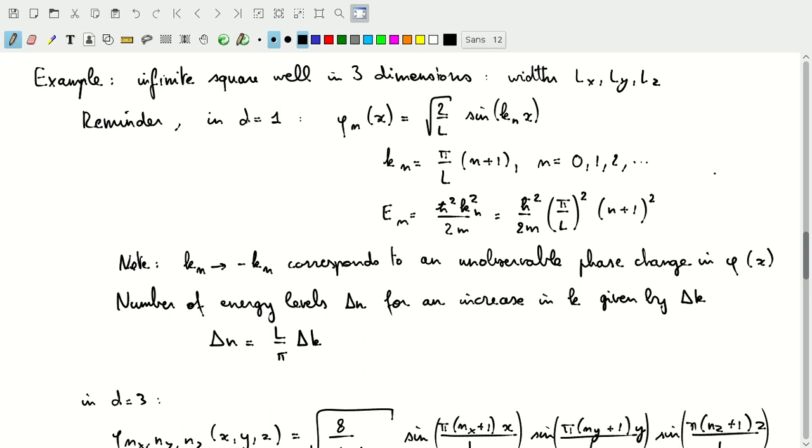k_n was any of a discrete number of values for this wave number: π/L times (n+1), where n can go from zero to any of the positive integers. We don't need to include the negative integers here because we'll just pick negative values of k_n, which through the sine will just change the sign on φ, which really just corresponds to a phase change and it's not observable. The energy in this case is just ℏ²/2m times k² squared.